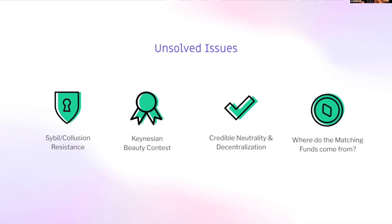I want to put everything on the table, including the unsolved issues. There's a problem of sybil and collusion resistance — if I can get more matching funds with more people contributing, why wouldn't I just make up identities? So there's a cat-and-mouse game where we're building new identity verification mechanisms to make it harder to create fake accounts and harder for groups to collude to get more of the matching pool. There's also the problem of Keynesian beauty contests — if you only fund the things you see as beautiful, you'll never fund the deep plumbing that sits behind what we know and love.